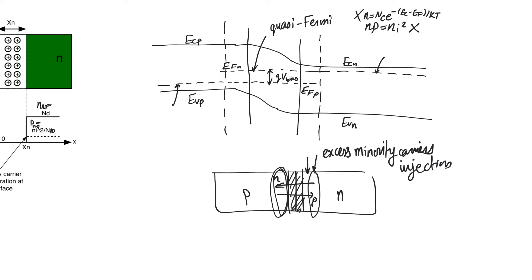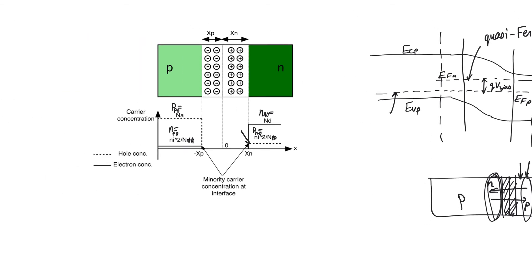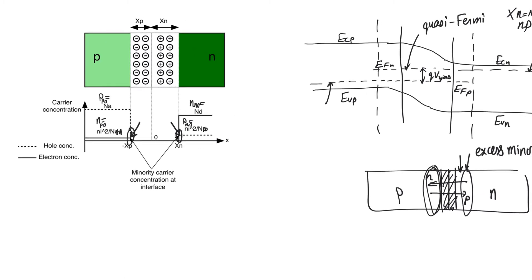To derive an expression for the forward current of a p-n junction, we first have to derive expressions for the minority carrier levels on either side of the interface when forward bias is applied. Namely, minority carriers on the n-side are ni-squared over ND, and minority carriers on the p-side are ni-squared over NA. The question is: when we apply forward bias, will the levels just at the interface increase, or will they remain the same? And if they increase, do they increase linearly or quadratically?